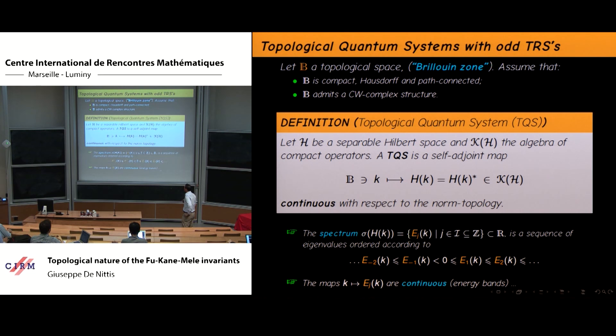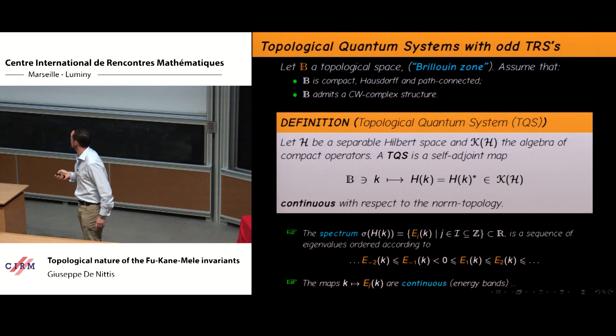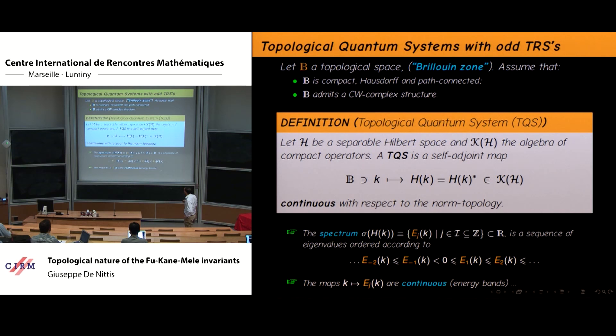At the mathematical level, the structure we consider is the datum of a compact Hausdorff path-connected space, which in condensed matter is played by the Brillouin zone. This is a technical condition which means that B has to be nice enough — a CW complex in topology. Once we have a space of this type, we can define a topological quantum system. My definition is simply a continuous map between this space B and self-adjoint operators taking values in the compact operators on some Hilbert space.